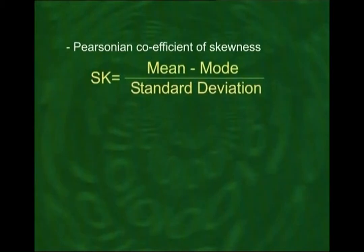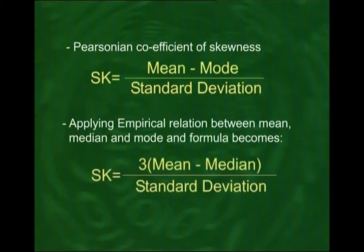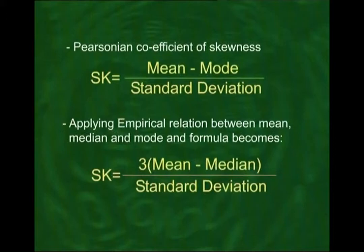Pearson's coefficient of skewness is defined as mean minus mode over the standard deviation. In situations where the mode is not very easily found, we can apply the empirical relation between the mean, median, and the mode, and in that situation the formula becomes three times mean minus median over the standard deviation. The question is: why do we divide by the standard deviation?